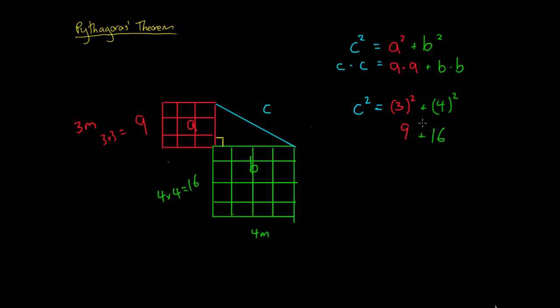So this gives us C squared. But then we need to know, to find the length of C, we don't want the length of C squared, we want the length of C. So what we need to do is take the square root. So we know that C squared is equal to 9 plus 16, and that 9 plus 16 is equal to 25.